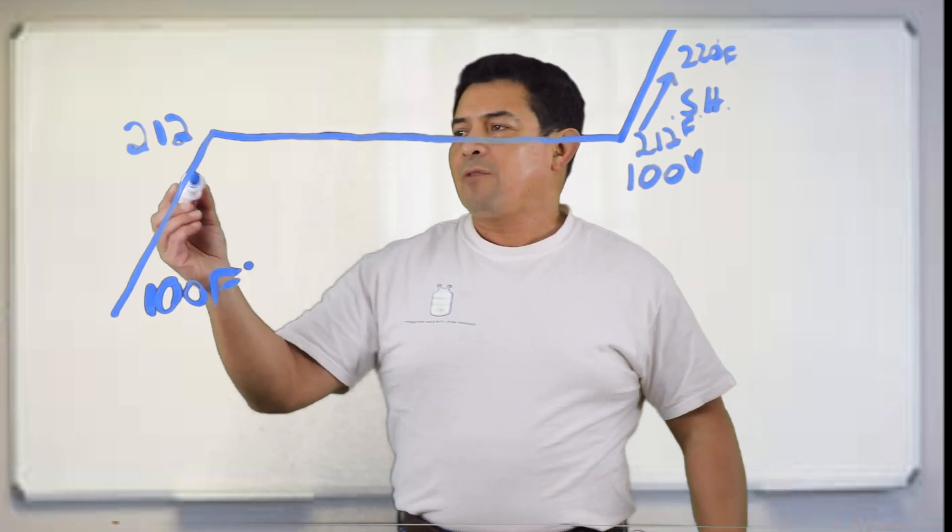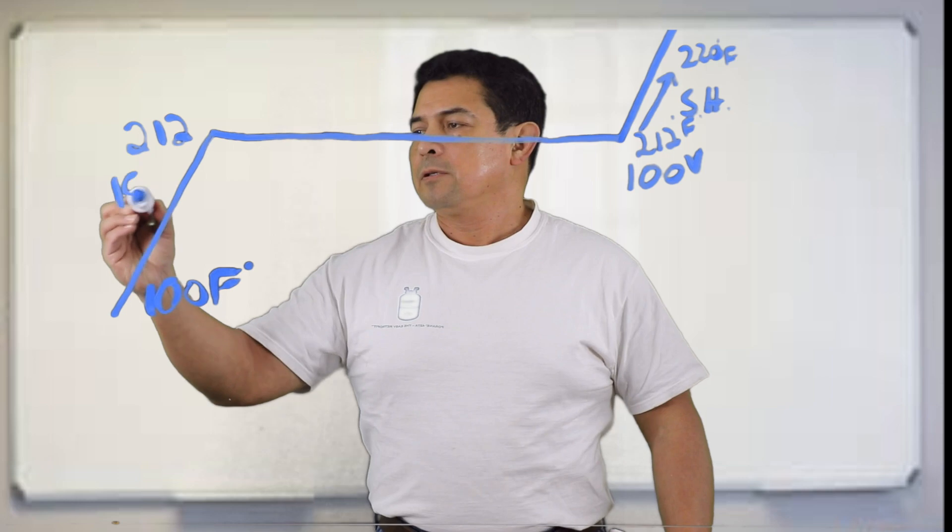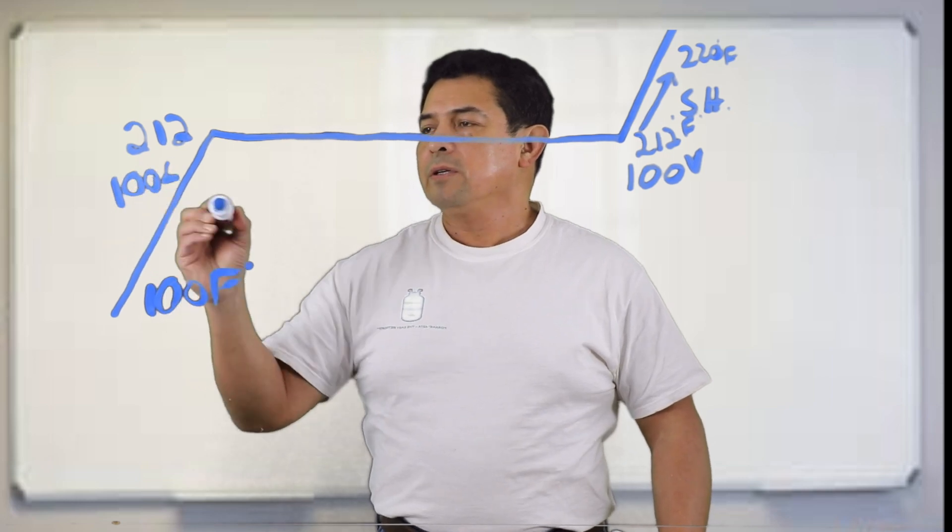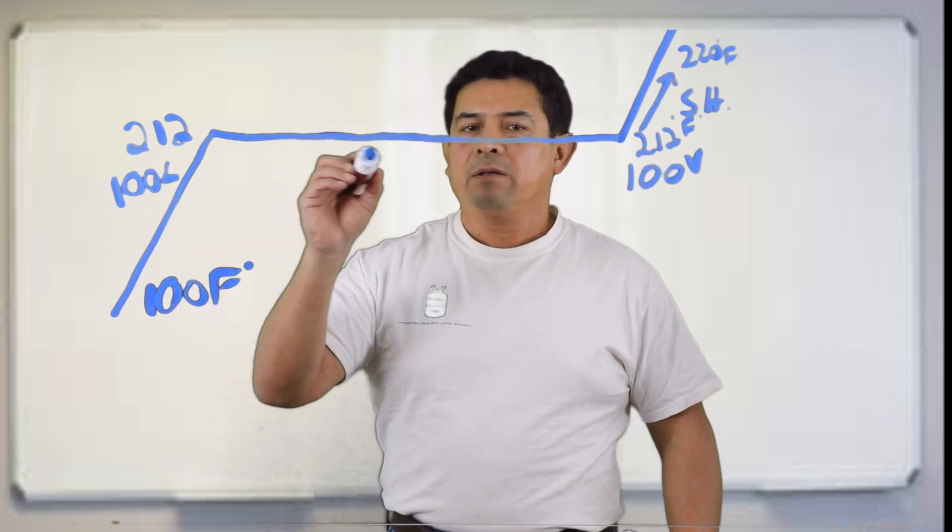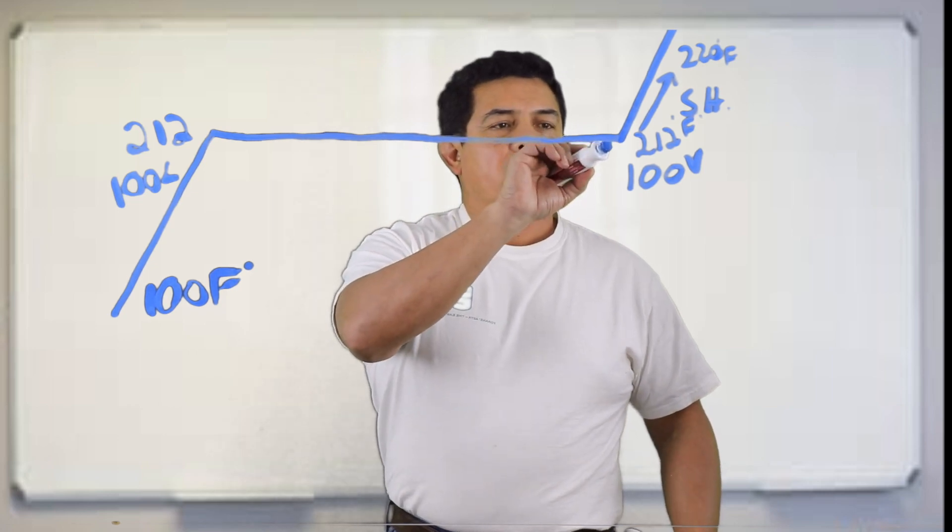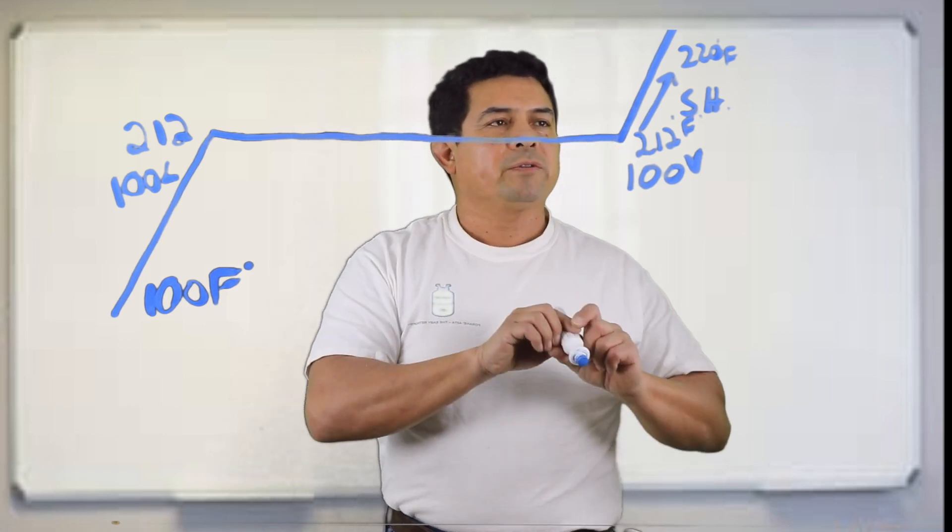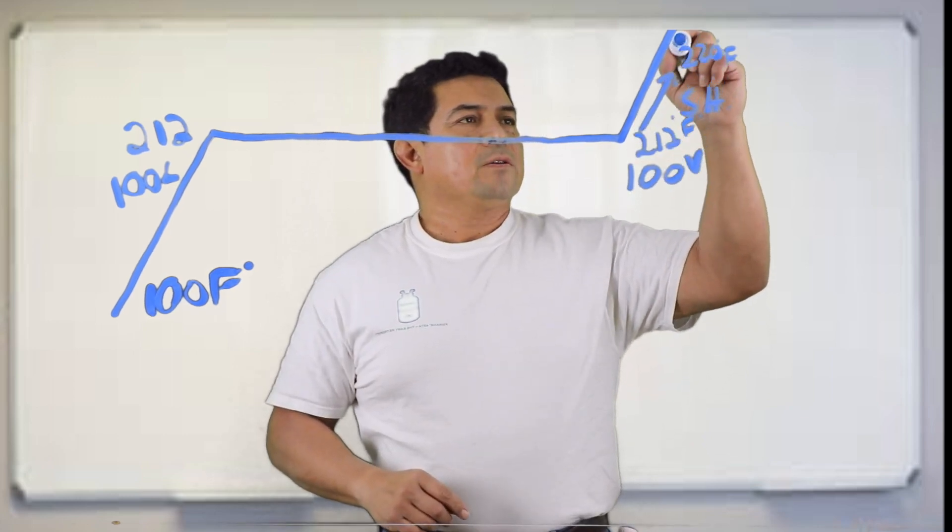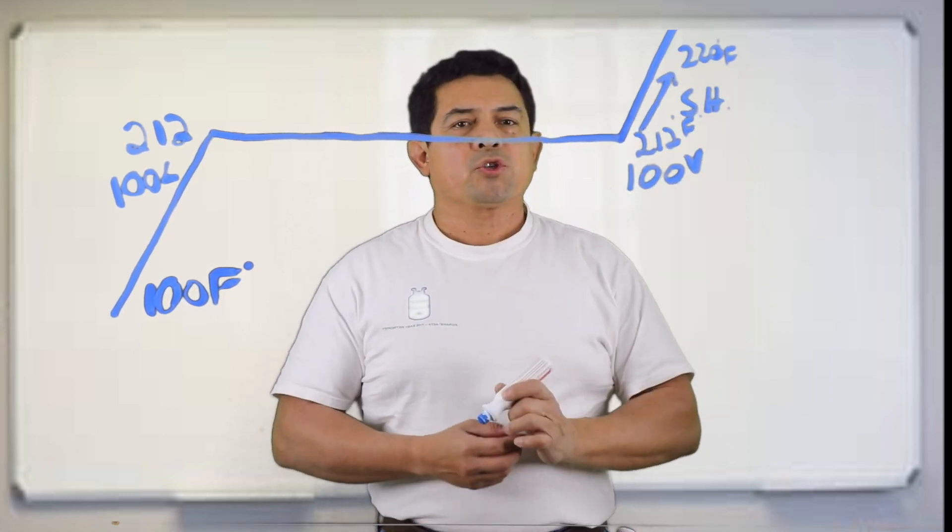So on this side, we have 100% liquid and then we have less and less liquid, more and more vapor. Once it's 100% vapor at 212 degrees, then we raise the temperature and we are superheating.